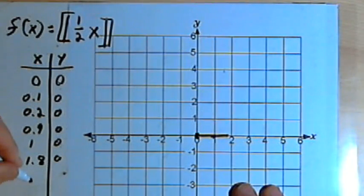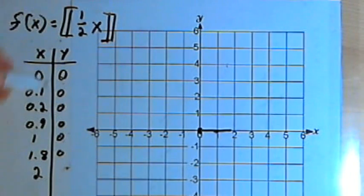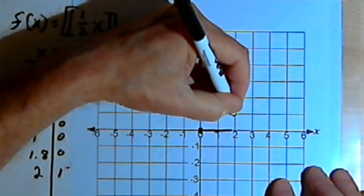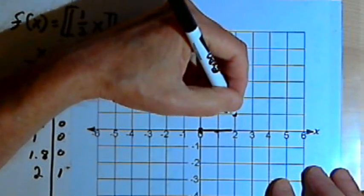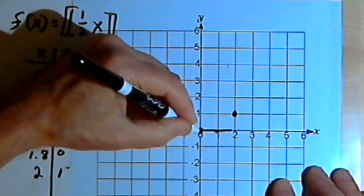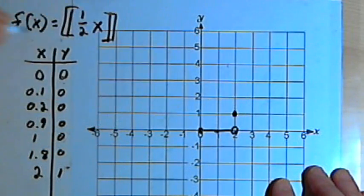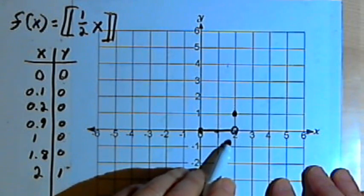This will finally change when I get to 2, because 1 half of 2 is going to be 1, and that will allow my graph to jump up here to (2, 1). For the first line that I drew, I'm going to end it in an open circle to show that I'm not including the 2.